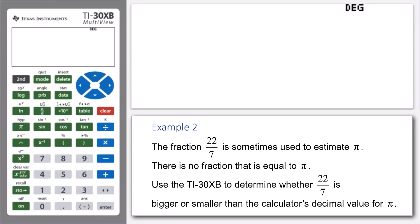In particular, we're going to look at the fraction 22 over 7, which is sometimes used to estimate pi. And what is really important for you to understand is that there's actually no fraction that is equal to pi. Here, we're going to use the TI-30XB to determine whether that fraction 22 over 7 is bigger or smaller than the calculator's decimal value for pi.